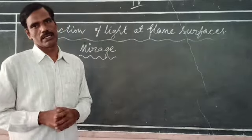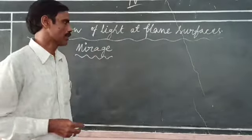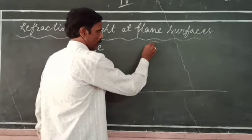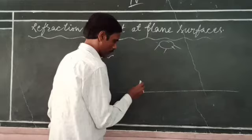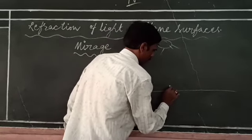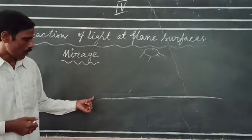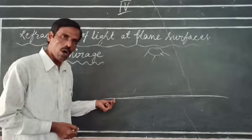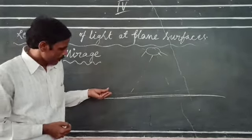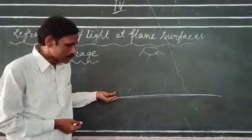This occurs due to the total internal reflection phenomenon. On a sunny day, because of the hotness of the sun, the surface of the road heats up. Because of this hotness, the air column which is nearer to the road becomes hotter, and as this becomes hotter, it will become a rare medium.